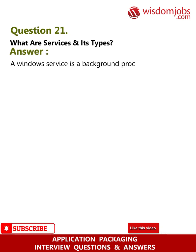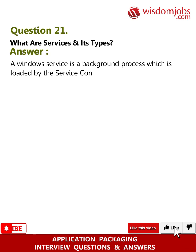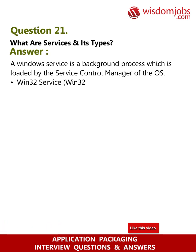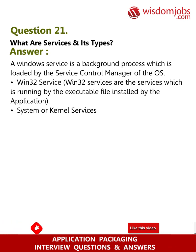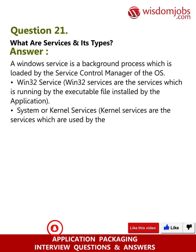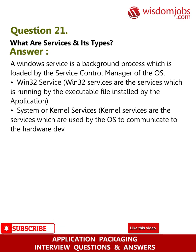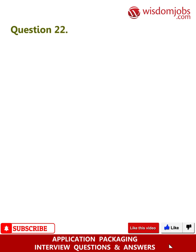Question 21: What are services and their types? Answer: A Windows service is a background process which is loaded by the Service Control Manager of the OS. Win32 services are services which run via an executable file installed by the application. System or kernel services are services used by the OS to communicate with hardware devices.